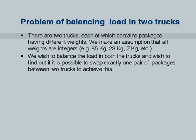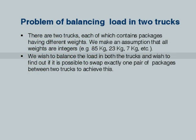Here is the problem. There are two trucks, each of which contains packages having different weights. We make an assumption that all weights are integers. There could be interesting variations if the weights were fractional, but that is not the problem at hand. The problem is we wish to balance the load in both trucks and find out if it is possible to swap exactly one pair of packages between the two trucks to achieve this.